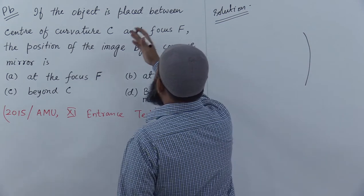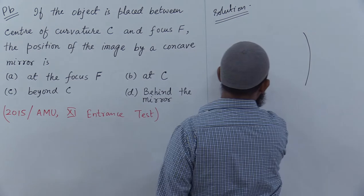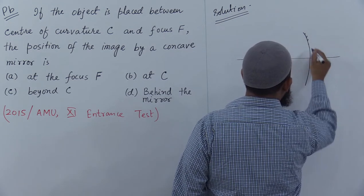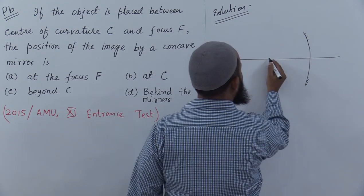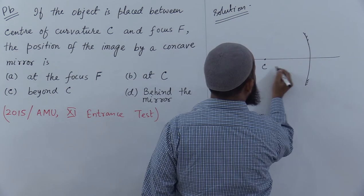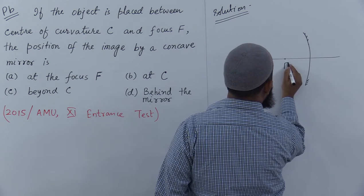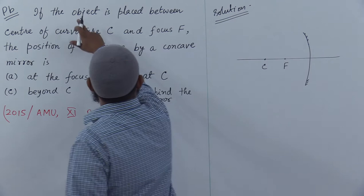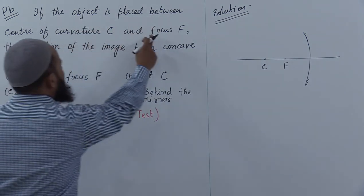If the object is placed between center of curvature C - this is a concave mirror with the polished surface here. For example, this is the center of curvature and this is the focus.